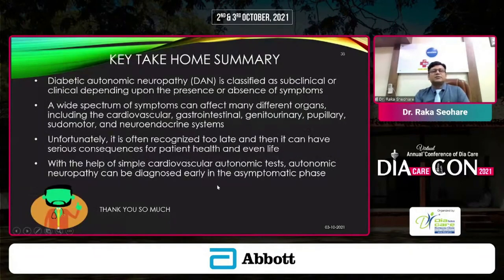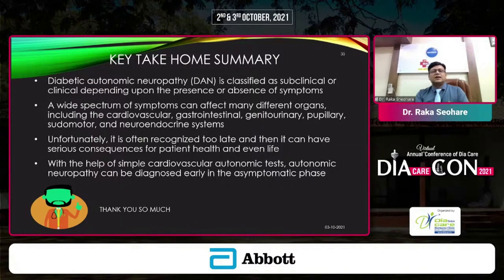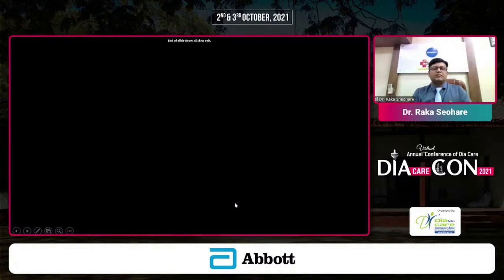Key take-home messages: Diabetic autonomic neuropathy can be classified as subclinical or clinical depending on the presence or absence of symptoms, and can have several detrimental presentations. It affects a wide spectrum of organs including cardiovascular, gastrointestinal, genitourinary, pupillary, sudomotor, and neuroendocrine systems. Unfortunately, it is often recognized too late, with serious consequences for patient health and even life. With the help of simple cardiovascular autonomic tests, autonomic neuropathy can be diagnosed, and these reproducible tests should be performed whenever the diagnosis is being considered.